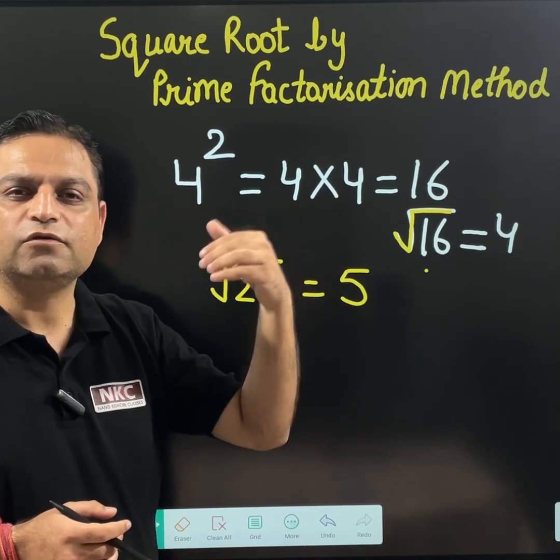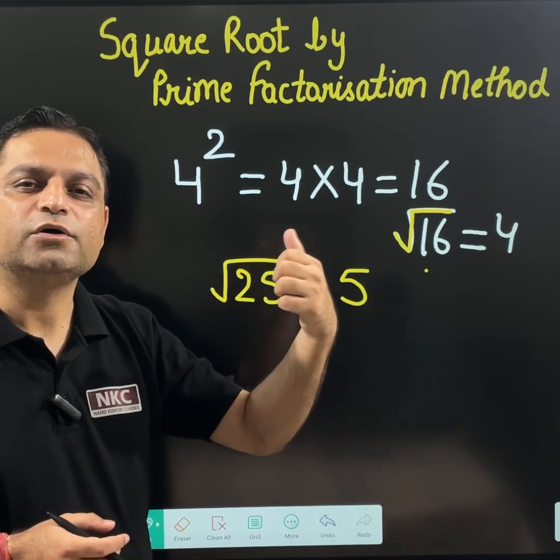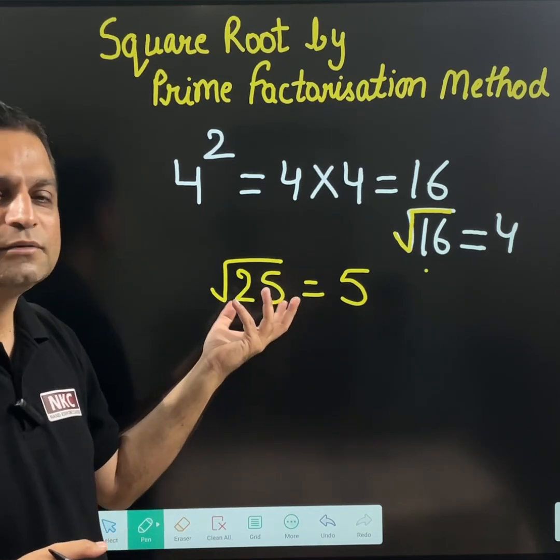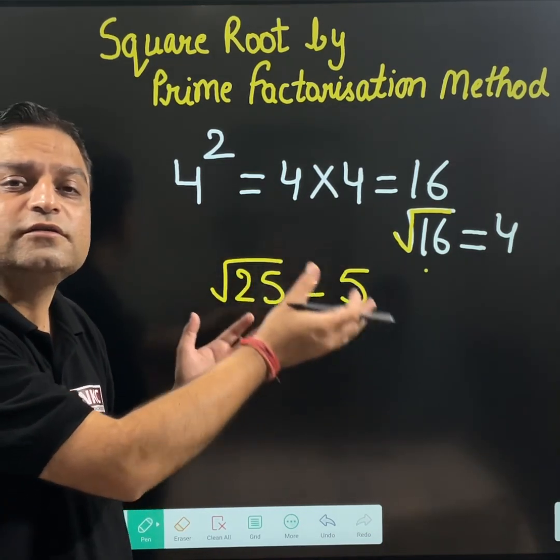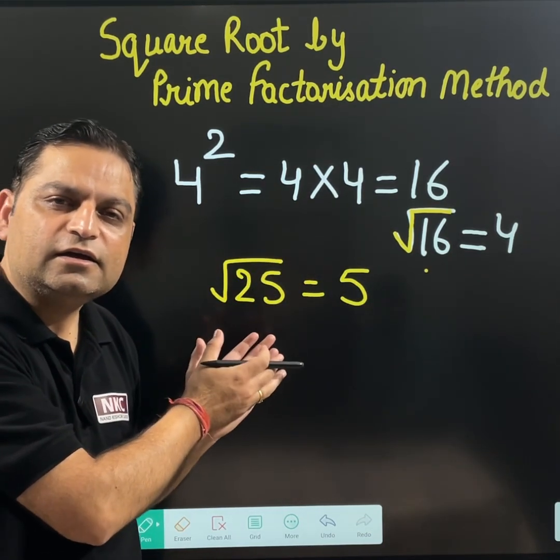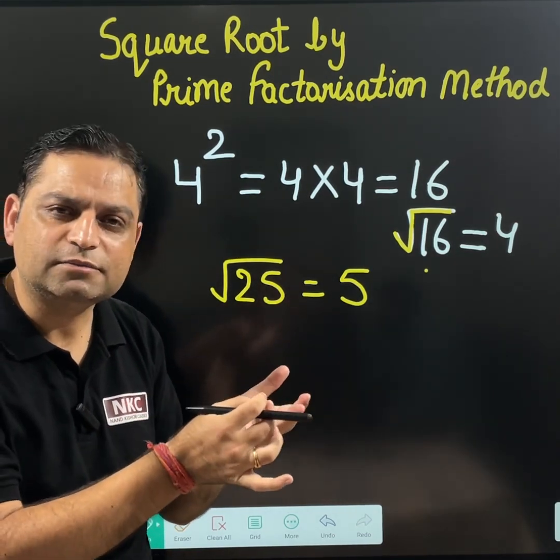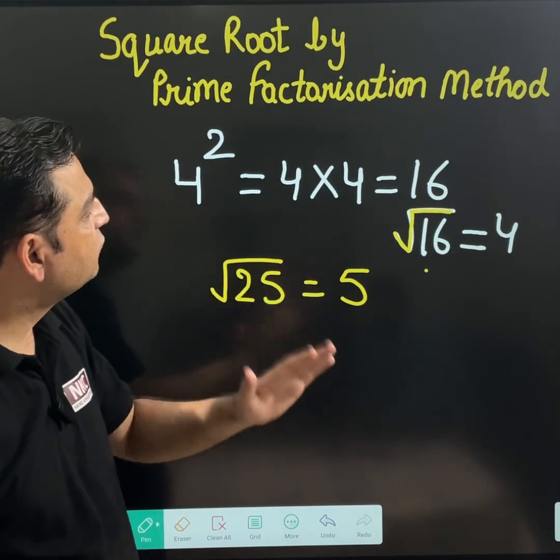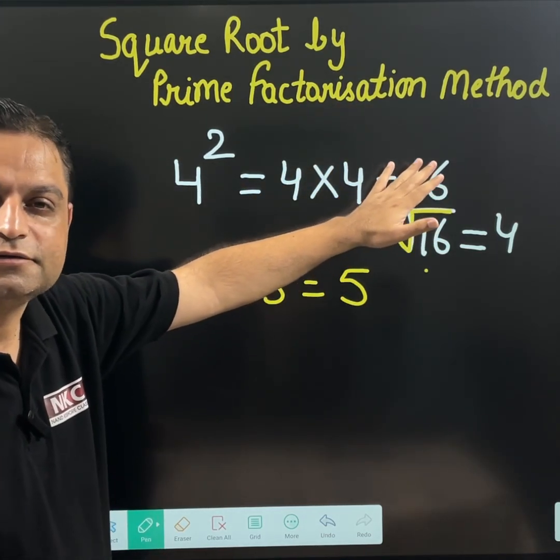That is why different rules are formed so that finding square root becomes easy. For example, a big number is there. You cannot directly, sometimes you are not aware whose square gives me this value. At that time, some methods are there like prime factorization method is there, division method is there, different methods are there. In this video, we are going to cover prime factorization method.